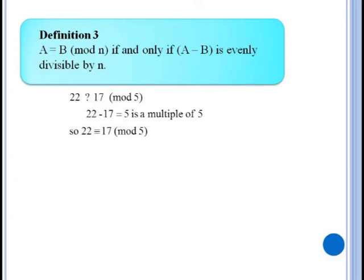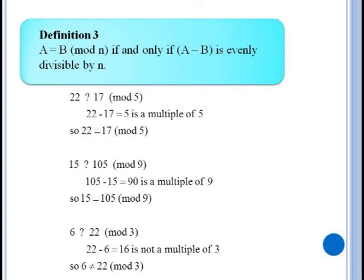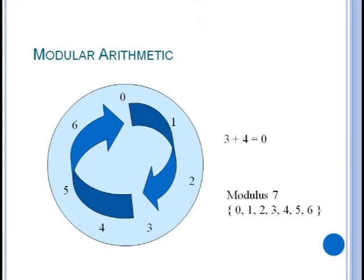Consider our last three examples using this new definition. To compare twenty two and seventeen mod five just take the difference. Twenty two minus seventeen equals five which is a multiple of five. Since five divides evenly into five, twenty two is equivalent to seventeen mod five. Likewise comparing fifteen and one oh five mod nine. One oh five minus fifteen is equal to ninety which is a multiple of nine. So fifteen is equivalent to one oh five. And comparing six and twenty two mod three. Twenty two minus six equals sixteen which is not a multiple of three so they are not equivalent.